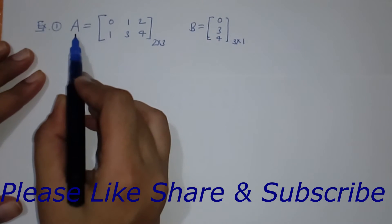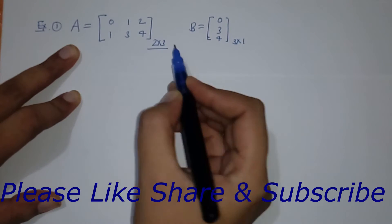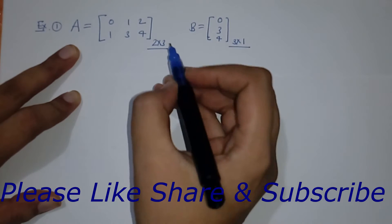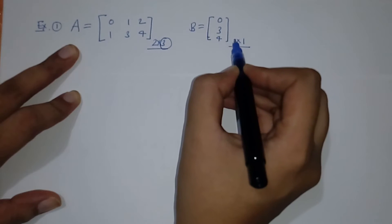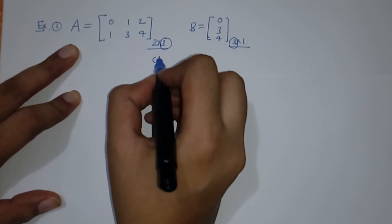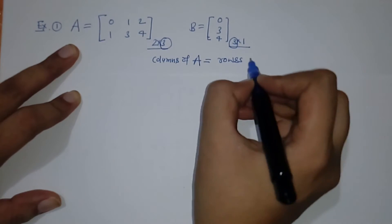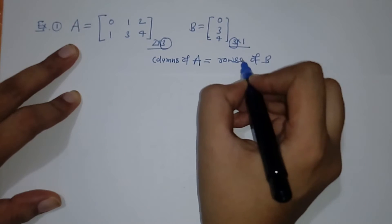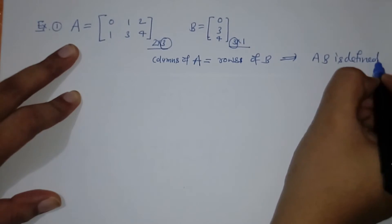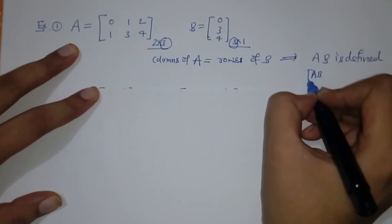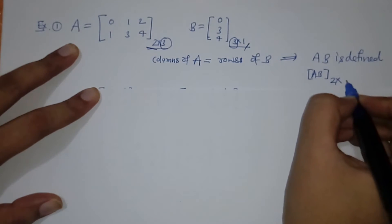Here we have to check whether matrix multiplication AB is possible or not. We have matrix A of order 2 by 3 and matrix B of order 3 by 1. We check: columns of A equals rows of B, so AB is defined. The order of AB will be the remaining dimensions: 2 by 1.